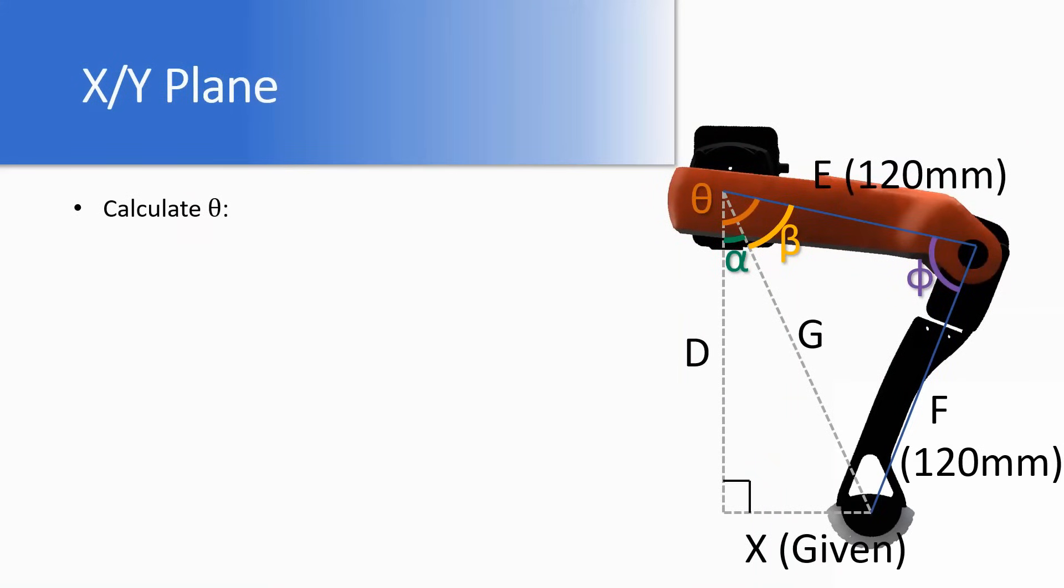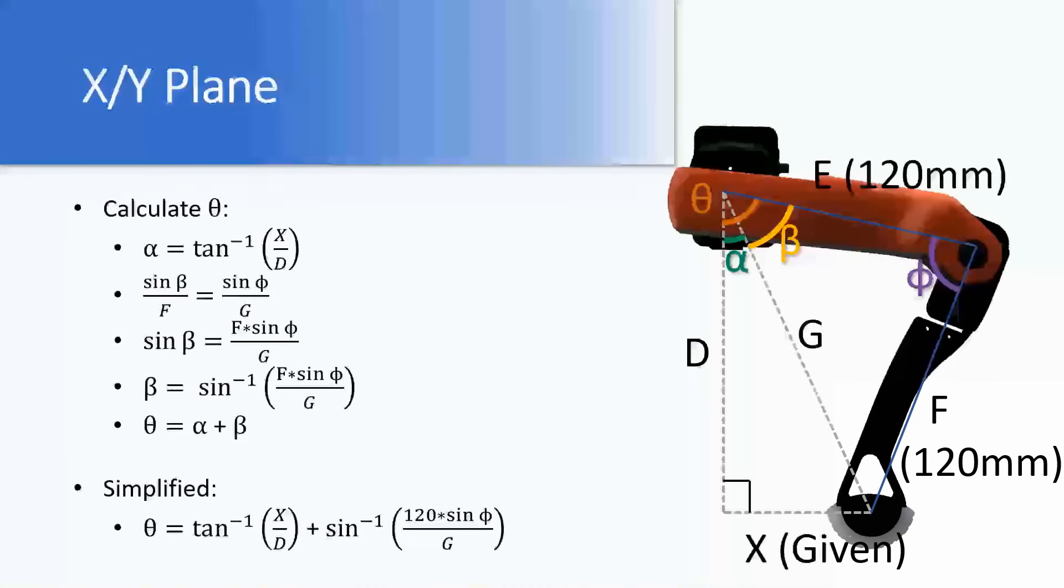Now to calculate theta, we first must calculate alpha as the inverse tangent of X over D. We can then use the law of sines to calculate beta with the sine of beta over F equals the sine of phi over G, which can then be factored to beta equals the inverse sine of F times the sine of phi over G. We then calculate theta using alpha plus beta. This can be simplified to theta equals the inverse tangent of X over D plus the inverse sine of 120 times the sine of phi over G.